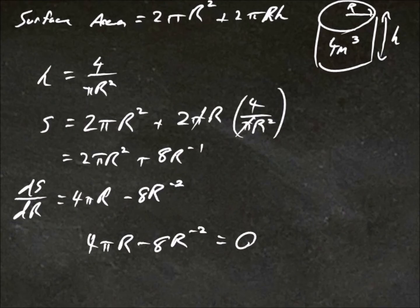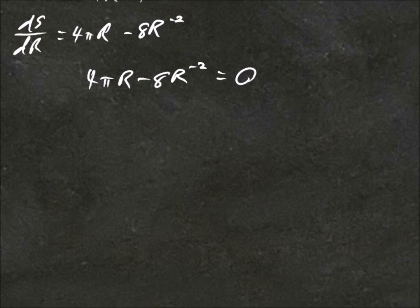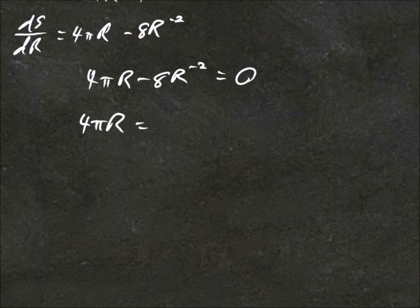So 4 pi r minus 8 r to negative 2 equals 0. We'll solve for r. So we could say 4 pi r equals 8 over r squared. So rearranging, putting the r squared over to the other side, we'd have r to the 3 equals 8 over 4 pi.